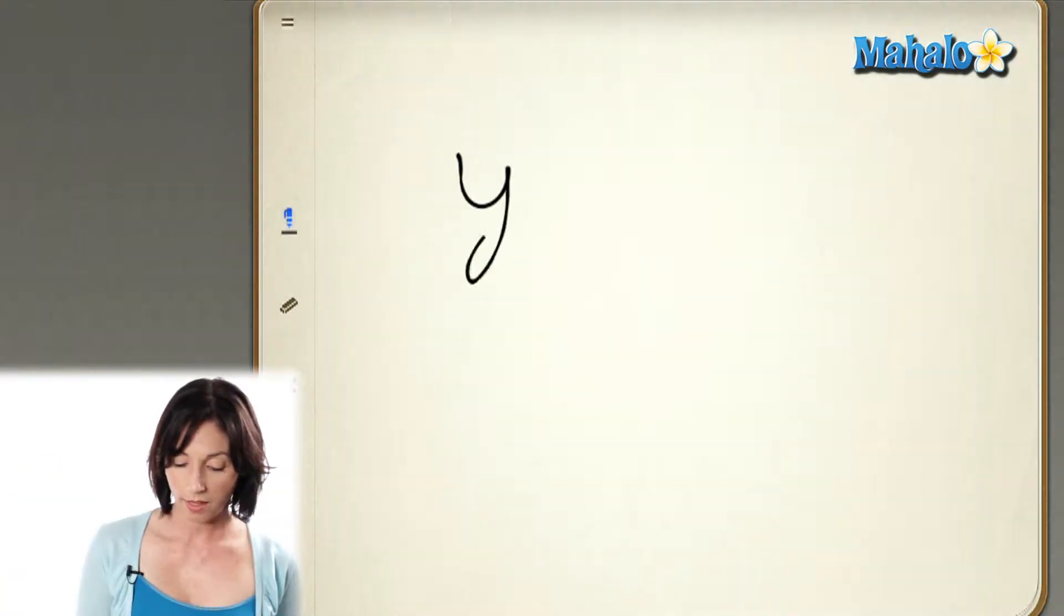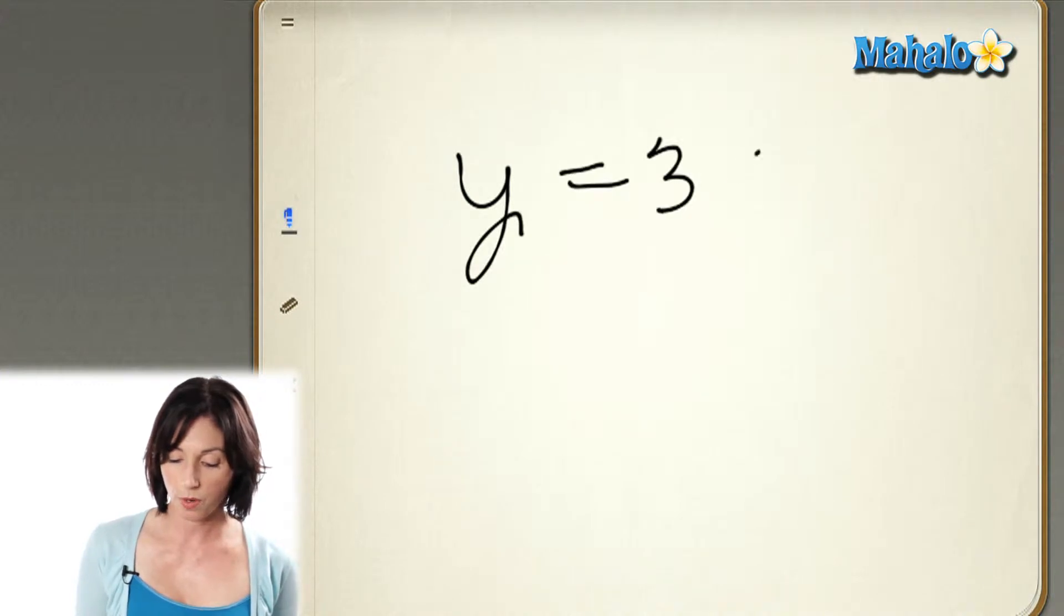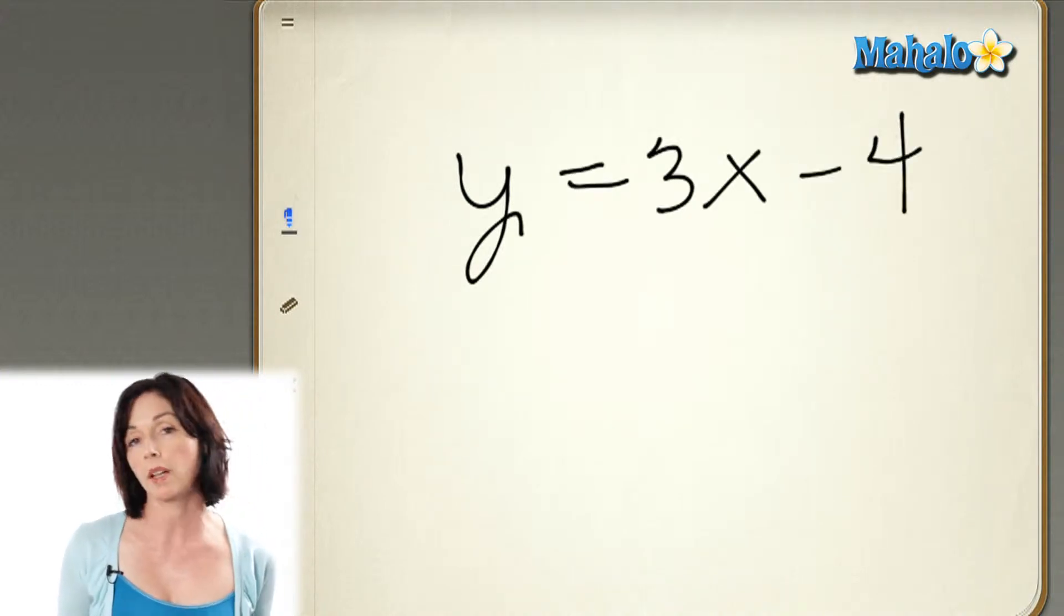Linear equations are equations of lines and they look something like this. y equals 3x minus 4. That would be an example of a linear equation.